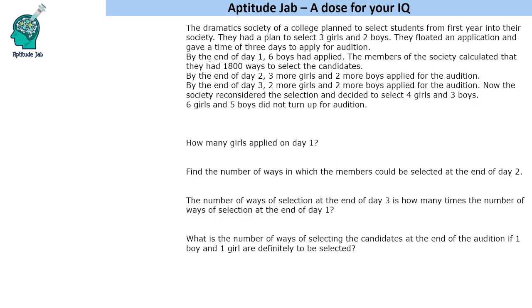By the end of Day 1, 6 boys had applied and a certain number of girls had also applied. The members calculated that there are 1800 ways to select the candidates.